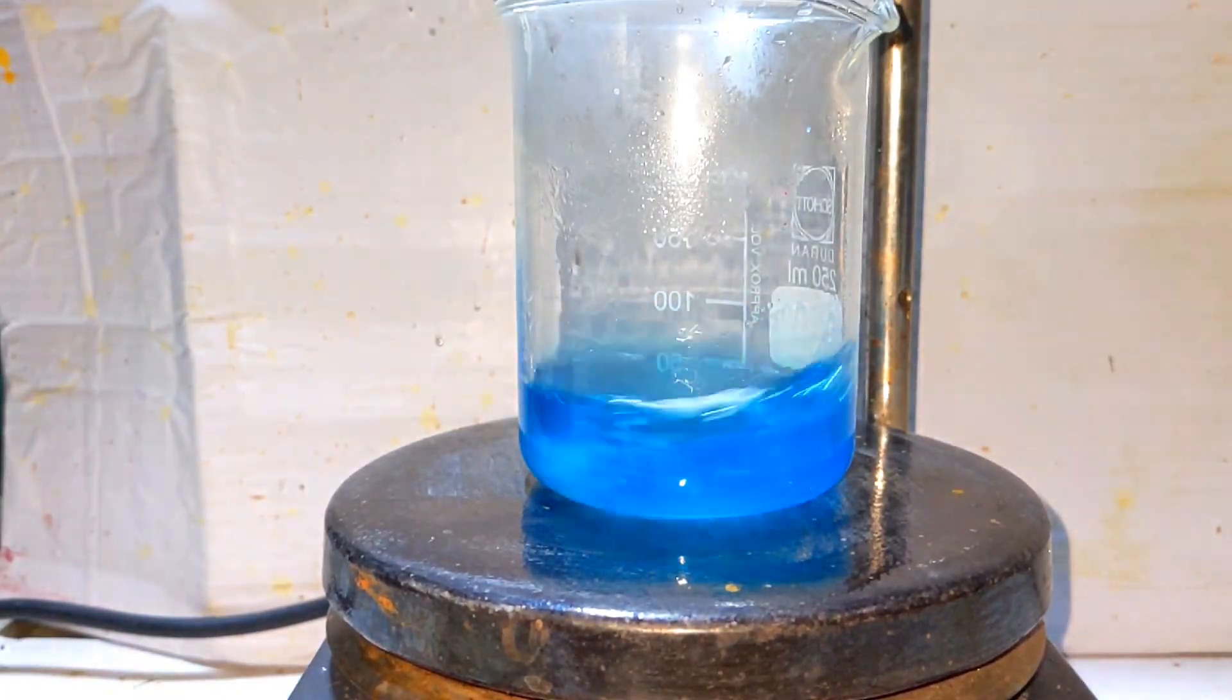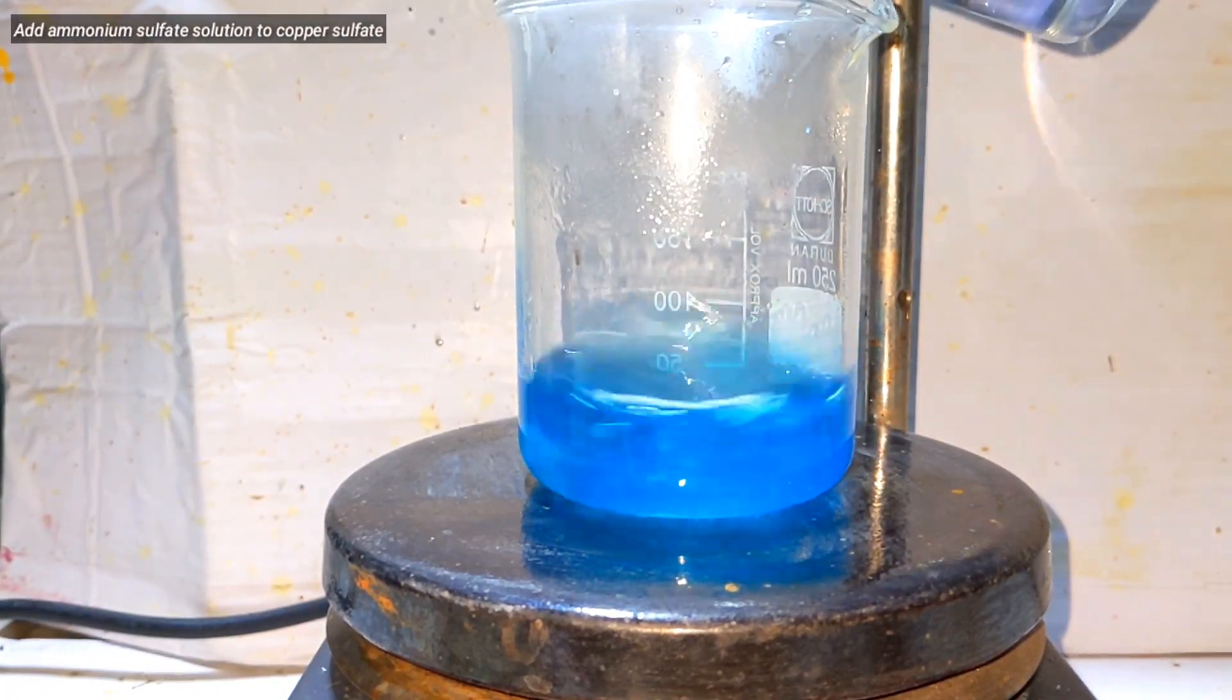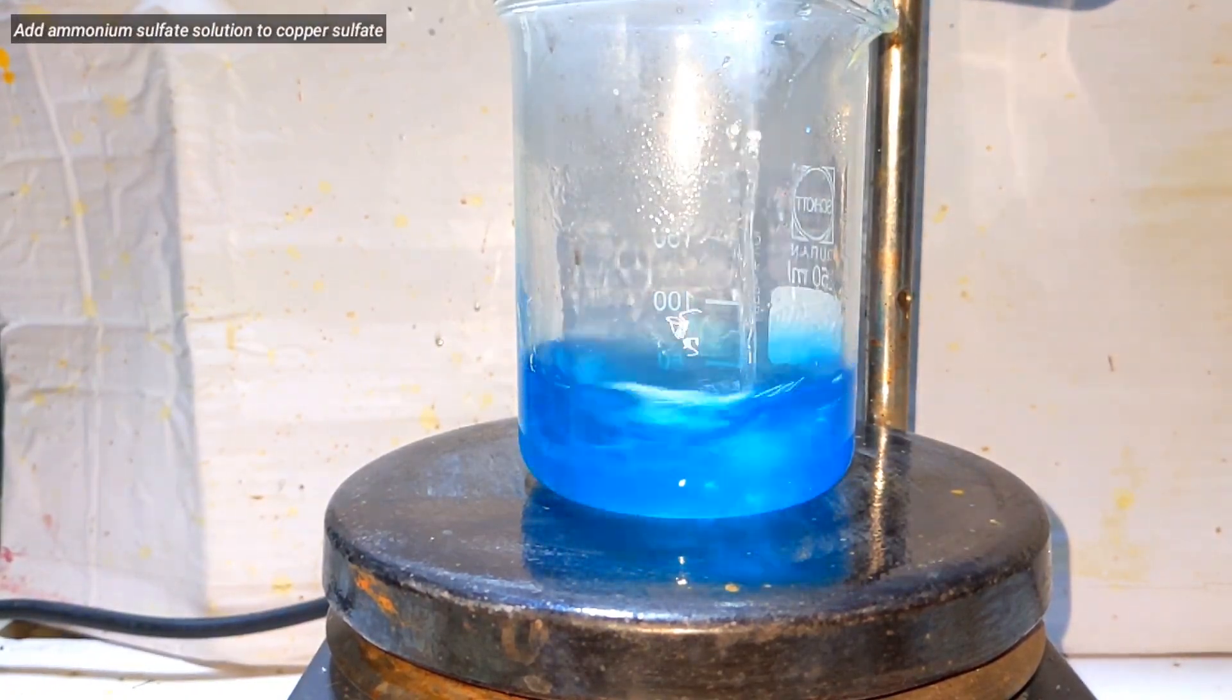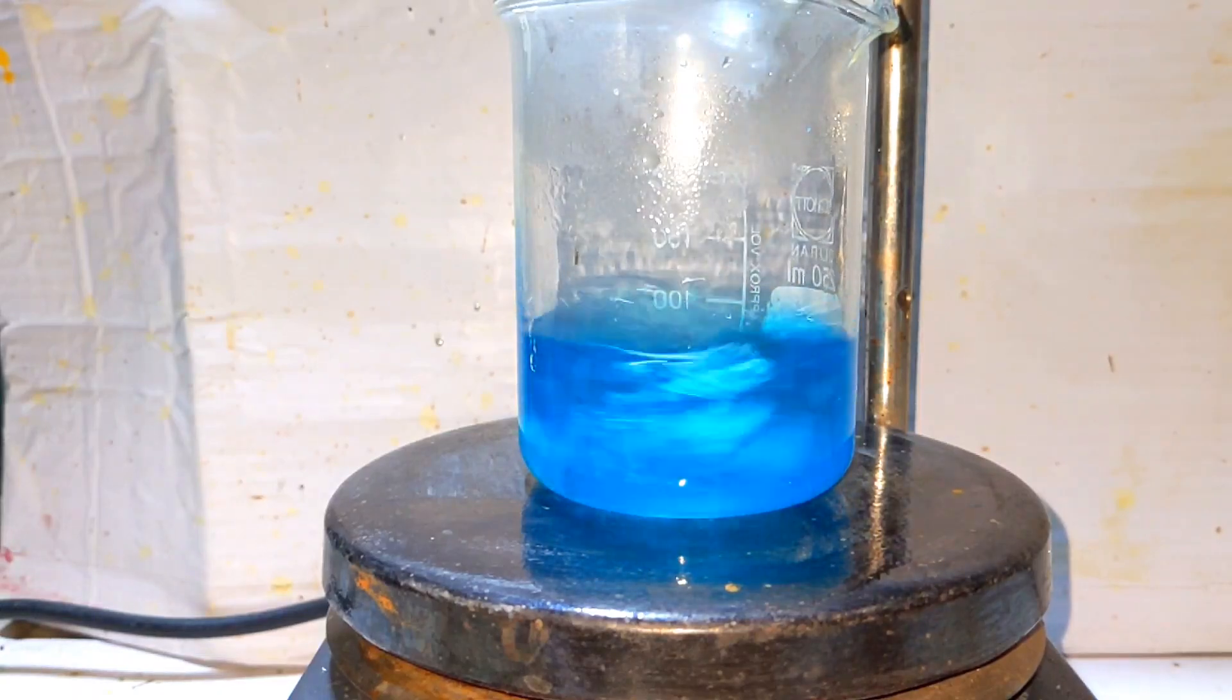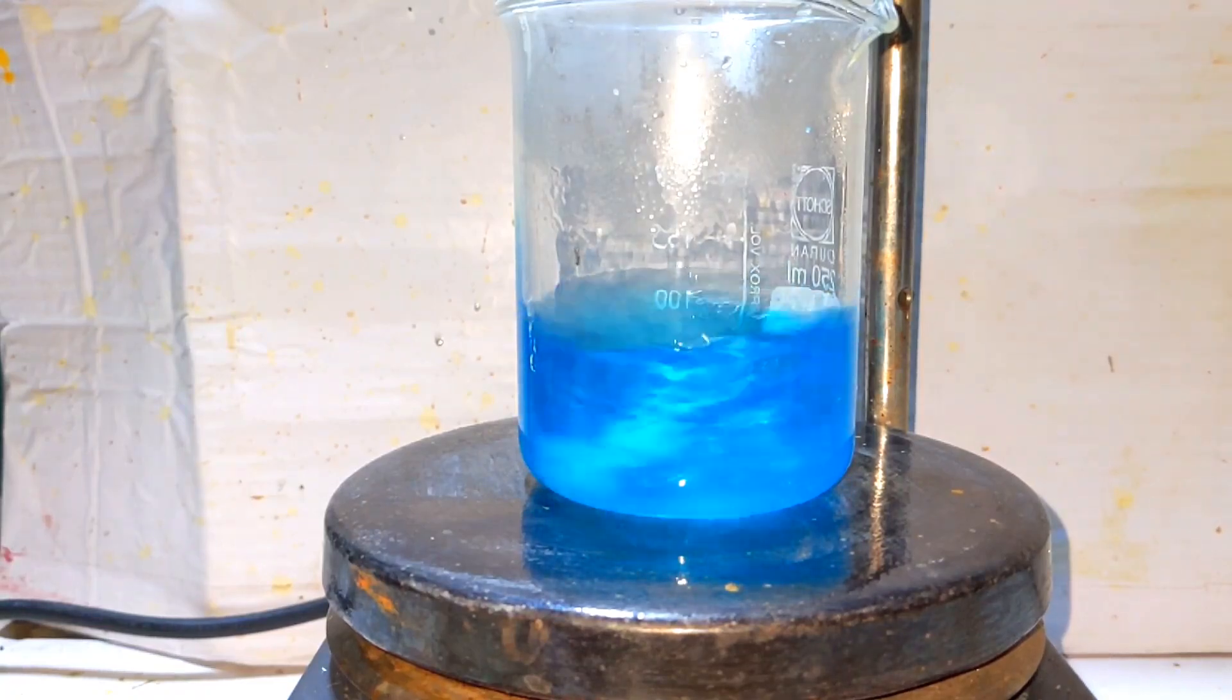The copper 2 sulfate solution was then placed on a hot plate and was heated. The ammonium sulfate solution was then added to the copper sulfate. The resultant solution was boiled for two to three minutes. This results in the formation of the double salt.